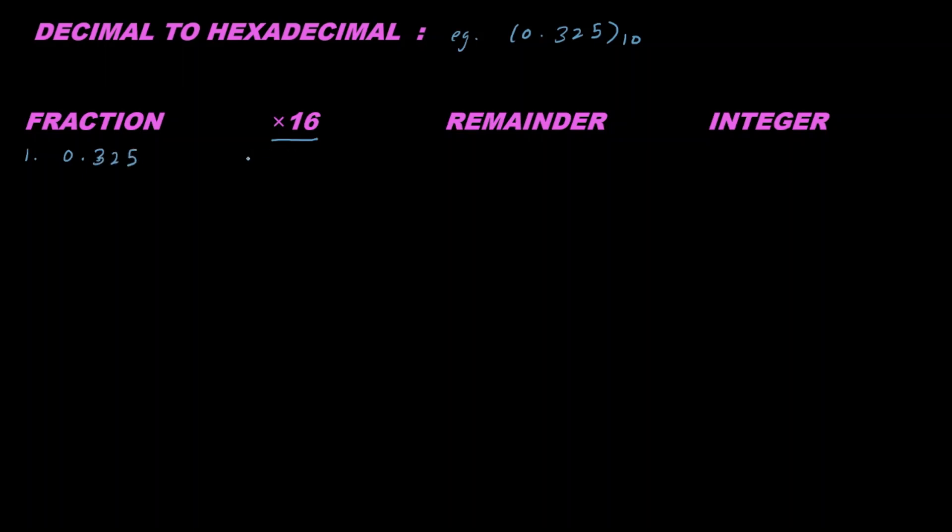Multiply 0.325 by 16, we get 5.2. So 0.2 is remainder and 5 is integer. In the second step, write the remainder here and multiply 0.2 by 16, which gives 3.2. So 0.2 is remainder and 3 is integer.